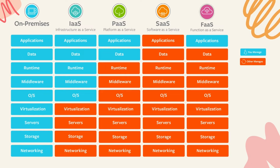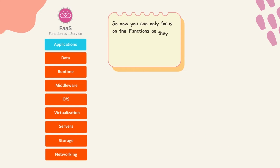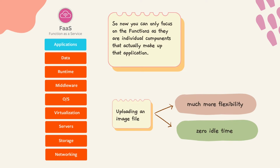To abstract the application layer further, a new cloud computing service model emerged: Function as a Service, or FaaS. So now you can only focus on the functions — the individual components that actually make up the application — such as individual tasks like uploading an image. You have so much more flexibility and zero idle time.